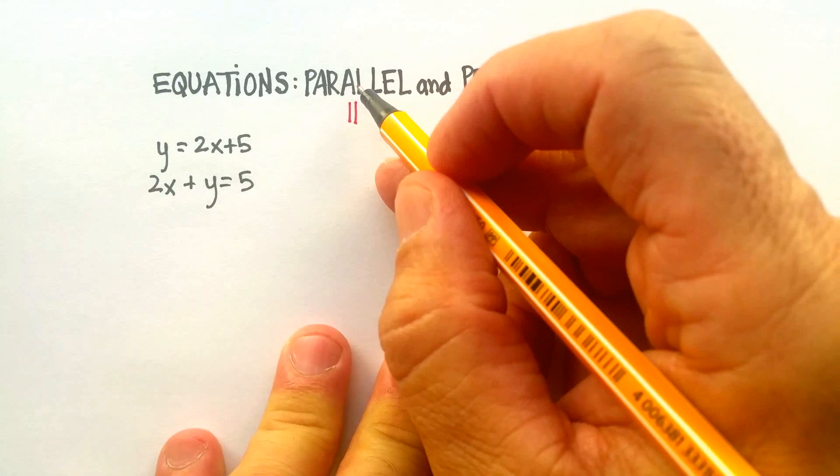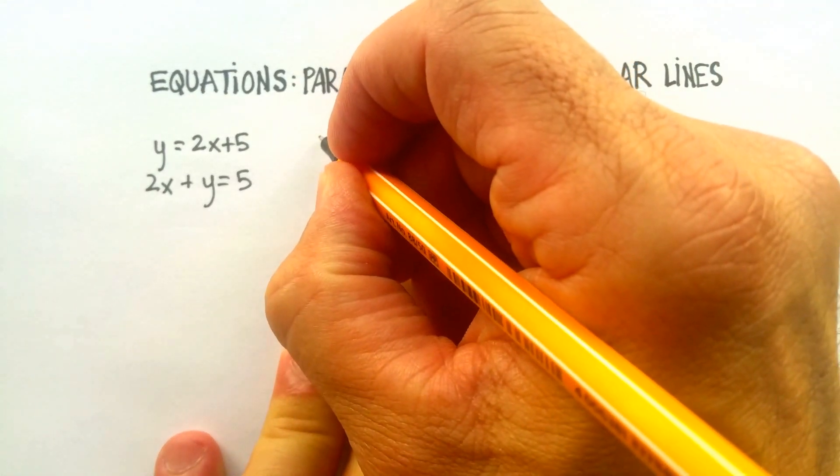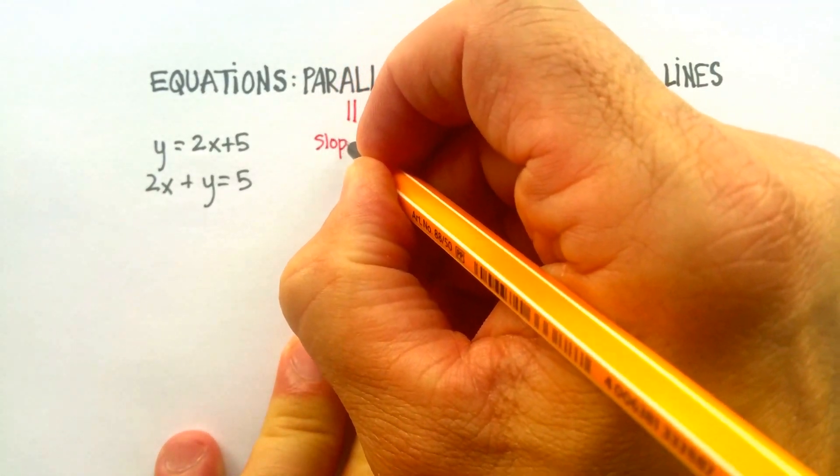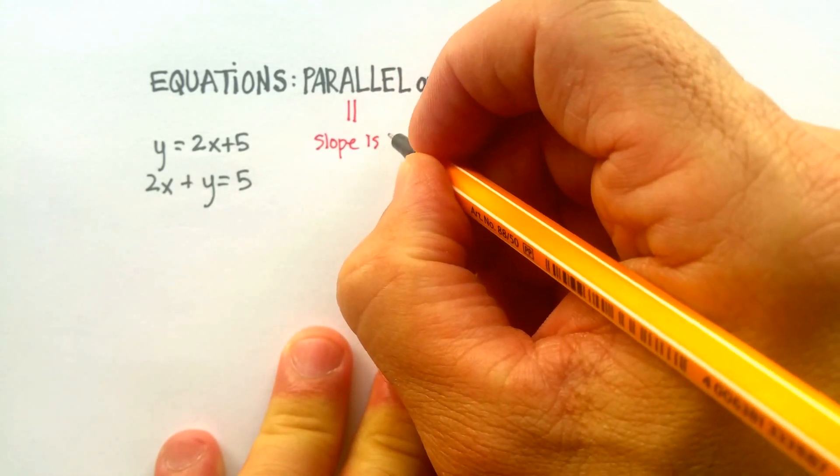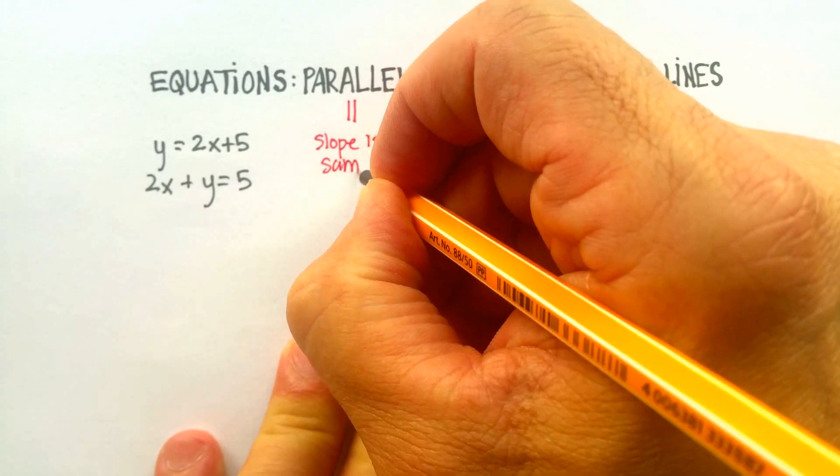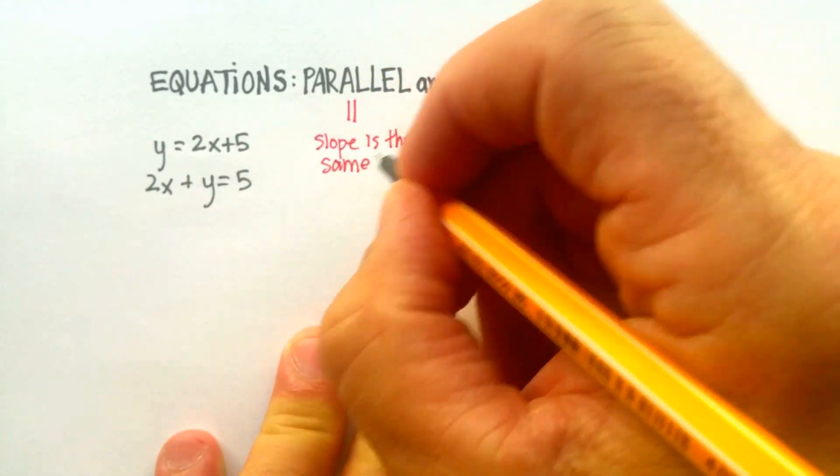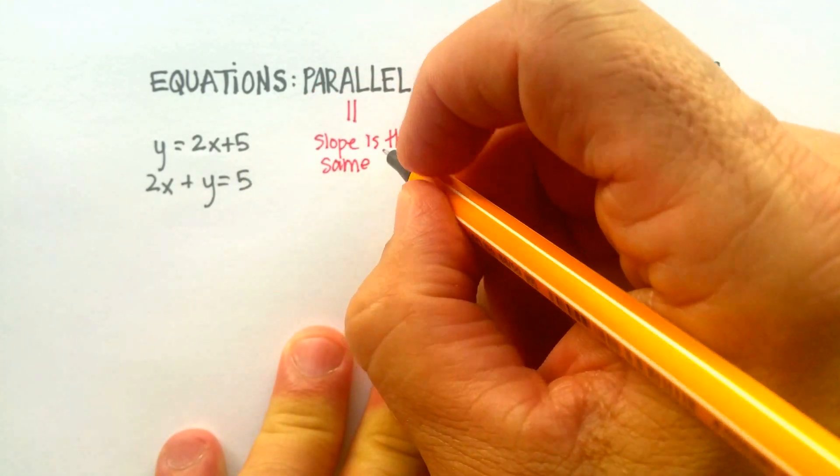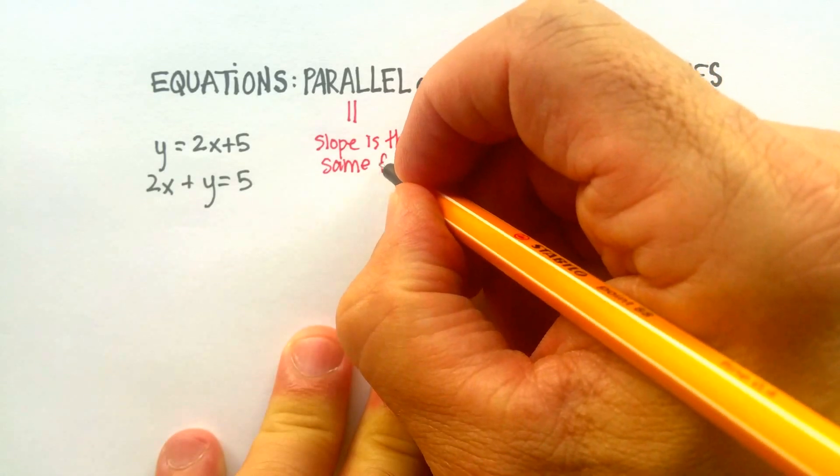Now the thing to know about parallel lines is that the slope is the same for both lines. So if you can figure out what the slope is on lines, you can figure out whether they're parallel or not for both lines.